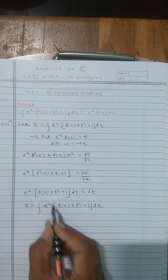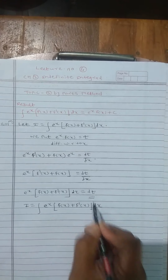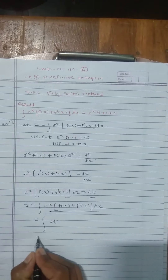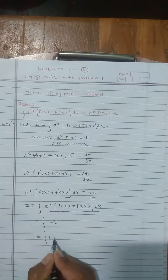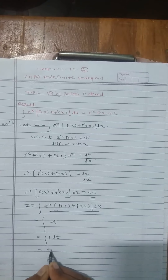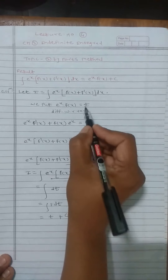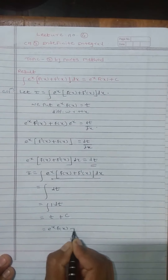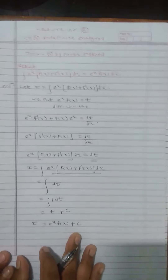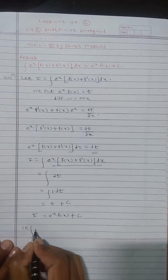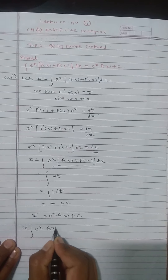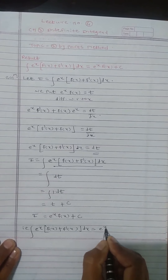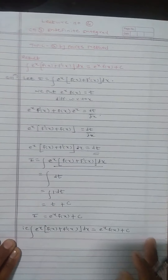So e^x [f(x) + f'(x)] equals dt. We substitute this whole expression equal to dt, so dt means 1·dt. The integral of 1 dt is t + C, but t is e^x · f(x). So e^x · f(x) + C is the required integral. That is, ∫e^x [f(x) + f'(x)] dx = e^x · f(x) + C.